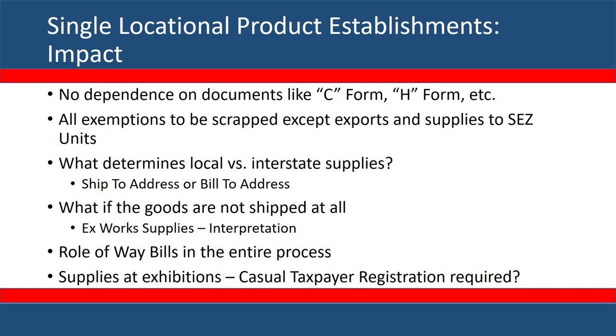If you have ex-factory or ex-works sales models, analyze the transport documents carefully and decide whether you are impacted. If yes, consider realigning your contract terms so that credits flow smoothly — through IGST for interstate supplies. Talk to vendors about how they plan to interpret this section: will they treat ex-works supplies as IGST or as CGST+SGST? This is one important area to resolve.